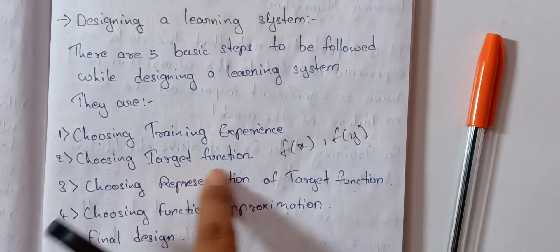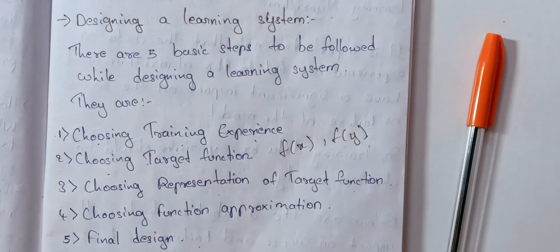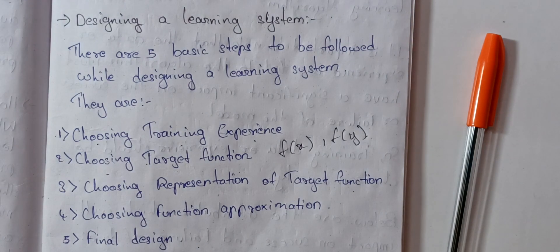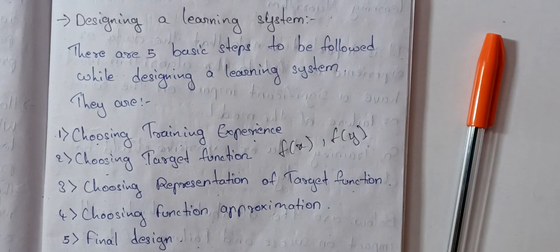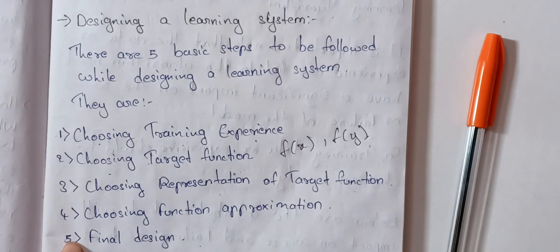We can represent target functions. Here we will choose direct and indirect target functions. We will select direct and indirect scores — winning board state is 100, draw board state is 0, losing board state is minus 100. Please refer to my previous videos, because these three steps are related to the first step.